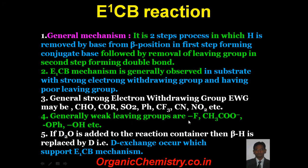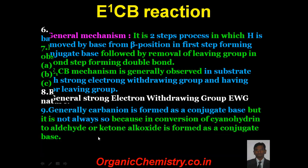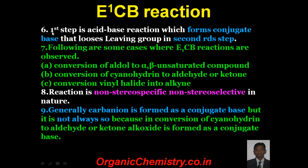Generally, weak leaving groups may be F⁻, COO⁻, OH, OPh, or OH. If D₂O is added to the reaction mixture, then beta hydrogen is replaced by deuterium — this is the deuterium exchange reaction, which supports the mechanism of E1CB. The first step is the acid-base reaction which forms a conjugate base that loses the leaving group in the second step, i.e., the rate-determining step.